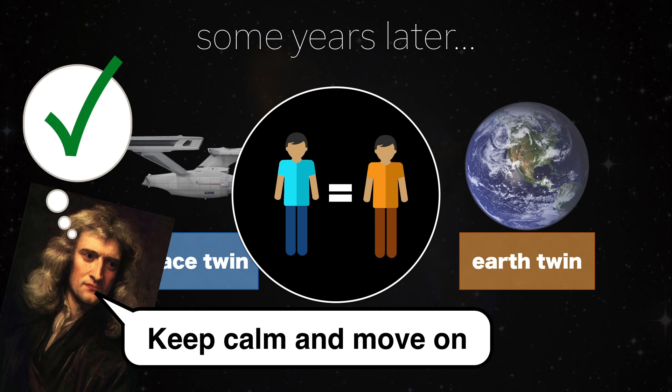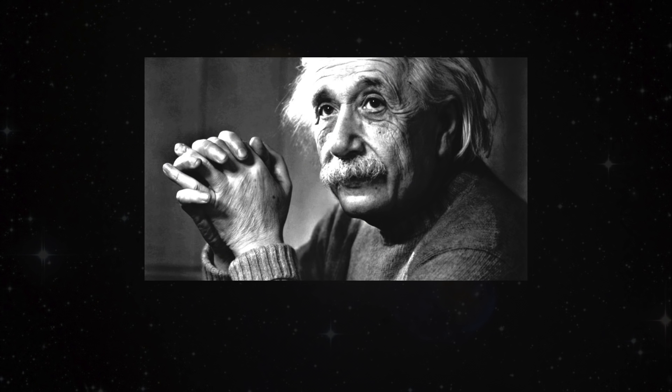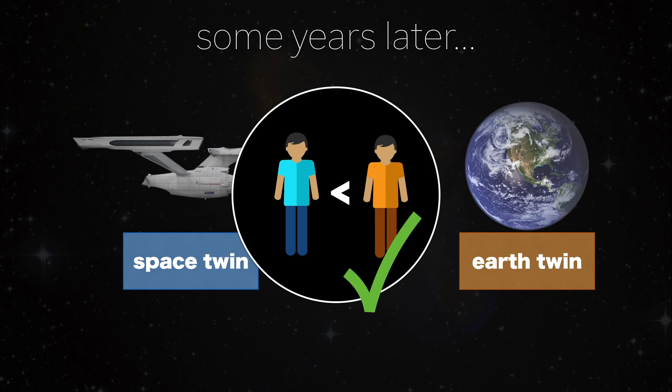Makes sense, right? It turns out that's wrong. When applying Einstein's laws of special relativity, Space Twin will be younger than Earth Twin upon his return. What?